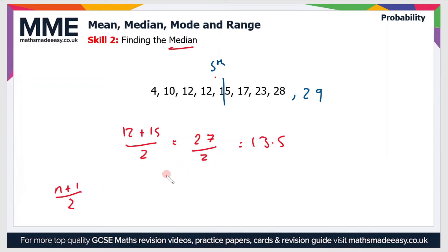And then if we have 9, as we do here, then the calculation becomes 9 plus 1 over 2, which is 10 over 2, which is 5. And as you can see, that gives us the 5th value for the median.